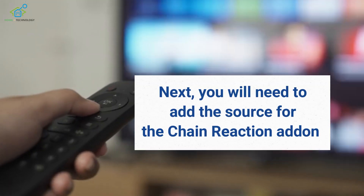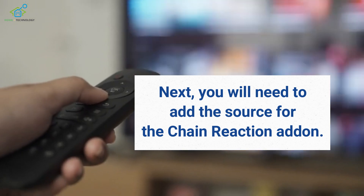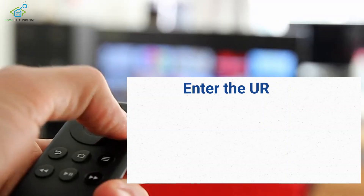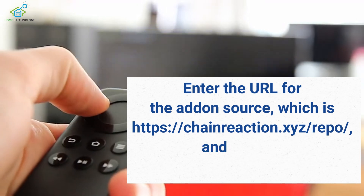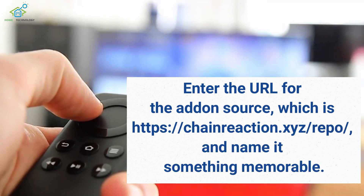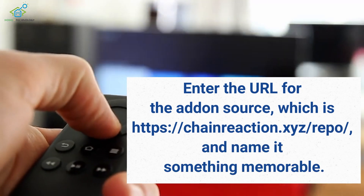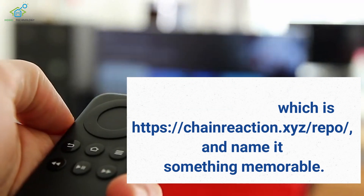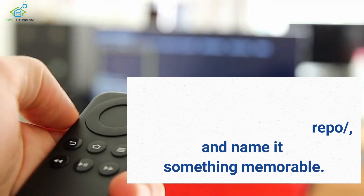Next, you will need to add the source for the Chain Reaction Addon. To do this, go back to the Settings menu, select File Manager, and then click on Add Source. Enter the URL for the Addon source, which is https://chainreaction.xyz/repo, and name it something memorable.